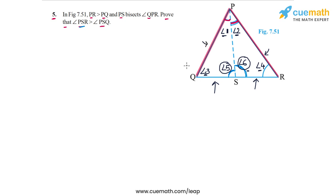Angle 3 is greater than angle 4 because PR is greater than PQ, which is given. Therefore angle 6, which is angle 1 plus angle 3, is greater than angle 5, which is angle 2 plus angle 4. This is the argument we are going to use. If you haven't followed it, don't worry — we'll now write it out properly.